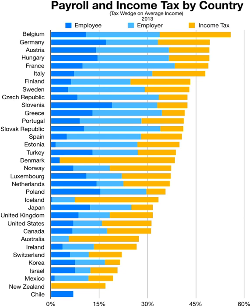Most jurisdictions exempt locally organized charitable organizations from tax. Capital gains may be taxed at different rates than other income. Credits of various sorts may be allowed that reduce tax. Some jurisdictions impose the higher of an income tax or a tax on an alternative base or measure of income.